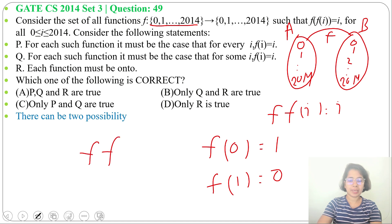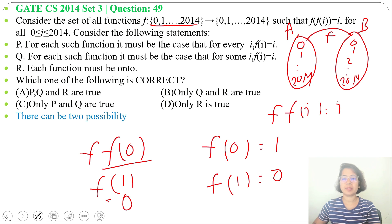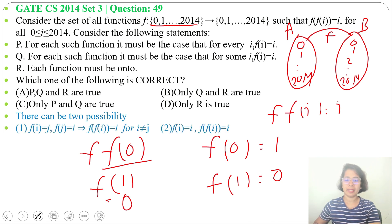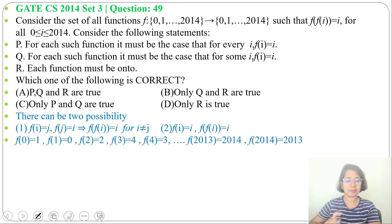Then f(f(0)) will be, f(0) is what? 1. So f(1), f(1) is 0. So there can be two possibilities: f(i) can be j, f(j) can be i, or f(i) can be i. In both cases, f(f(i)) will be i. For example,